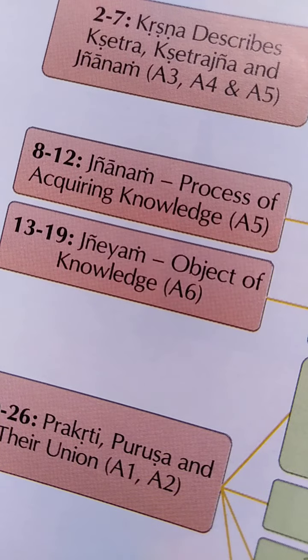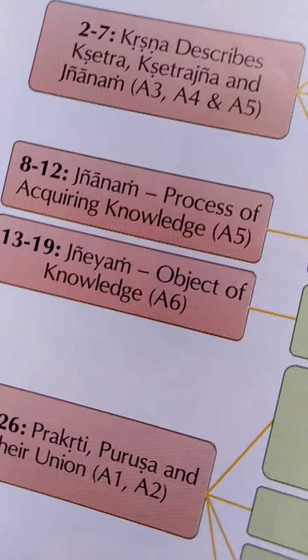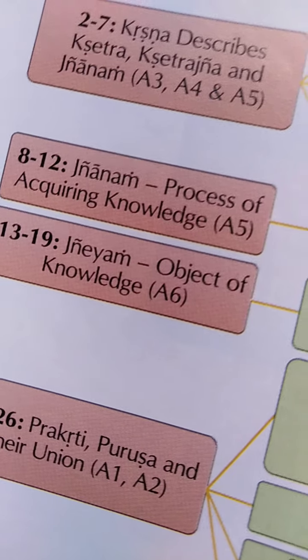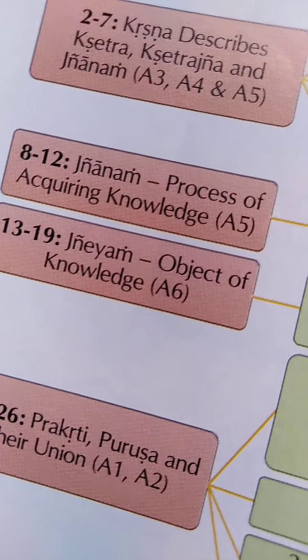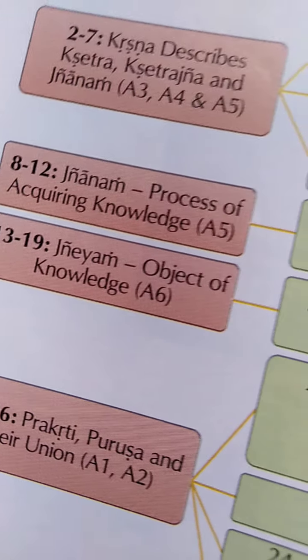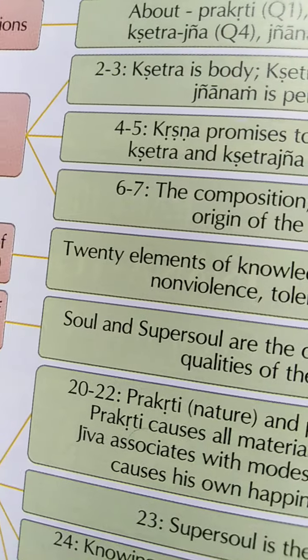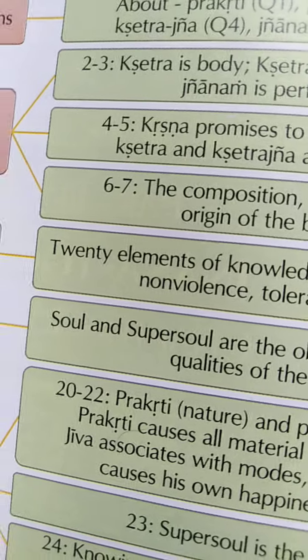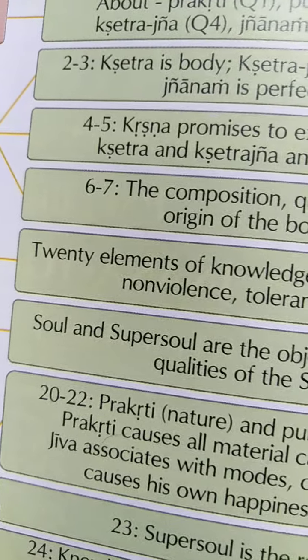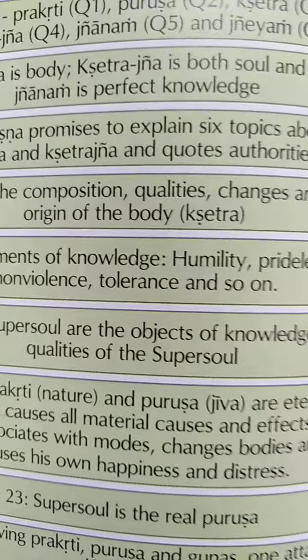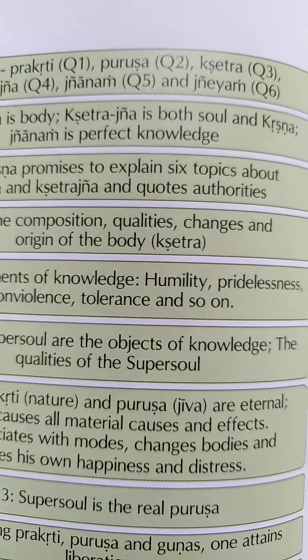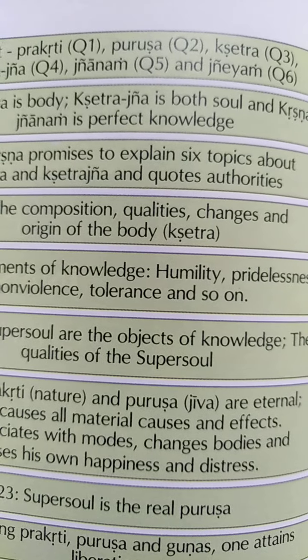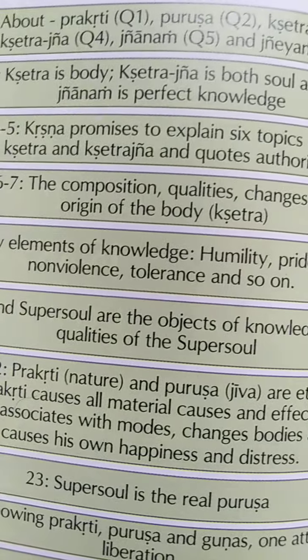Then in the thirteenth to nineteenth shloka, Krishna explains Geyam — the object of knowledge. What are the objects of knowledge? What should one know? Krishna says the soul and the Supersoul are the only objects of knowledge. The qualities of the Supersoul are also described in these shlokas.